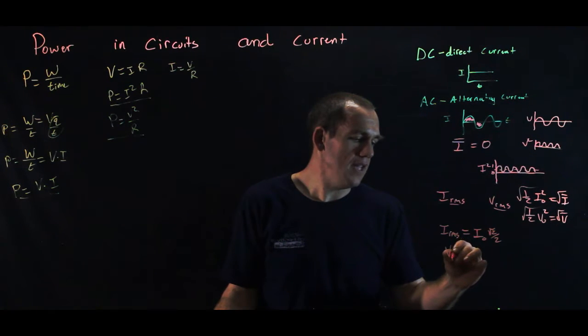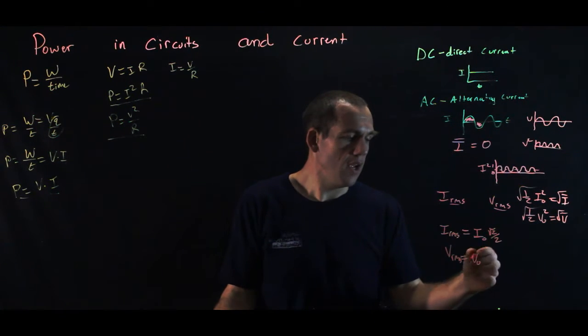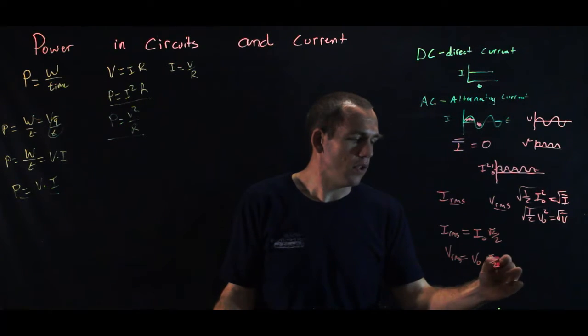And similarly, VRMS is equal to the peak, or peak voltage, V0, times the square root of two over two.